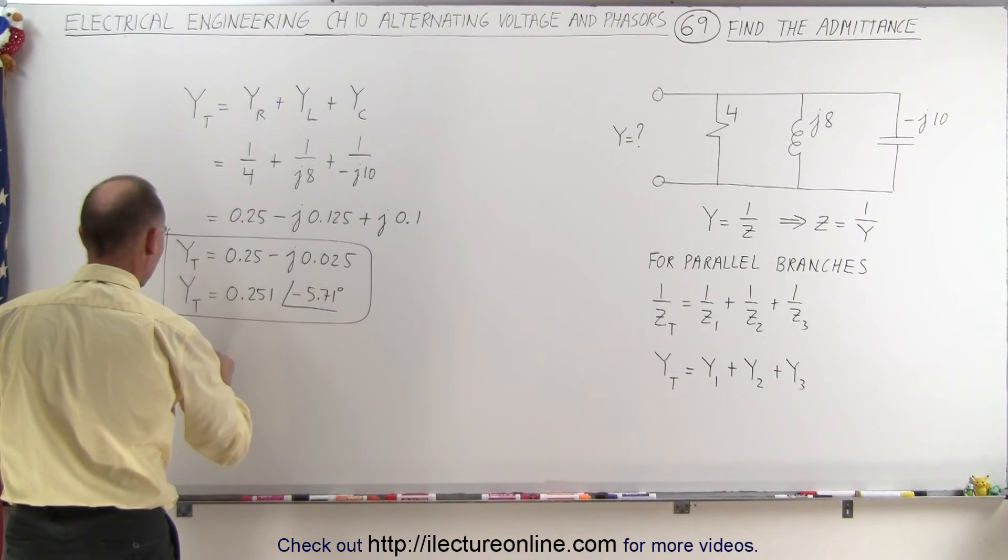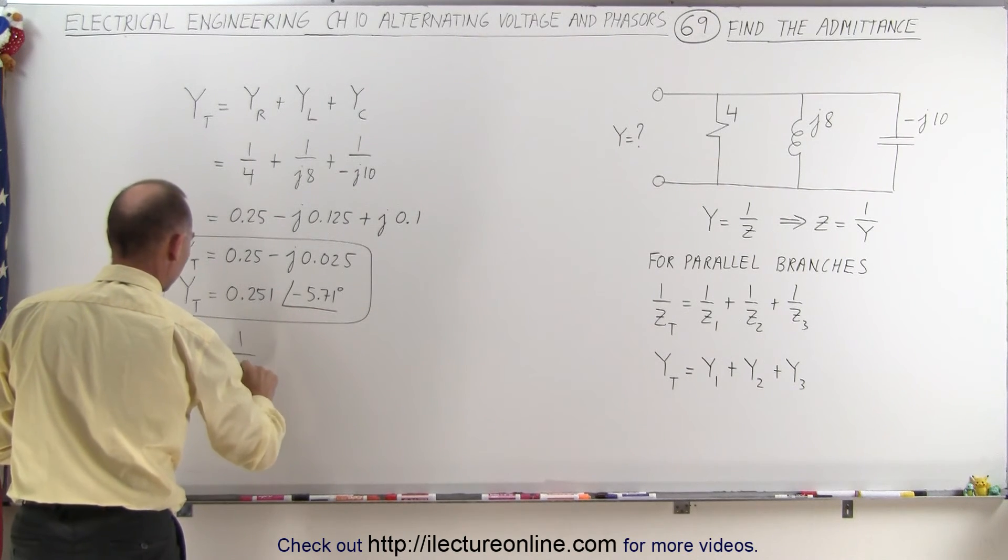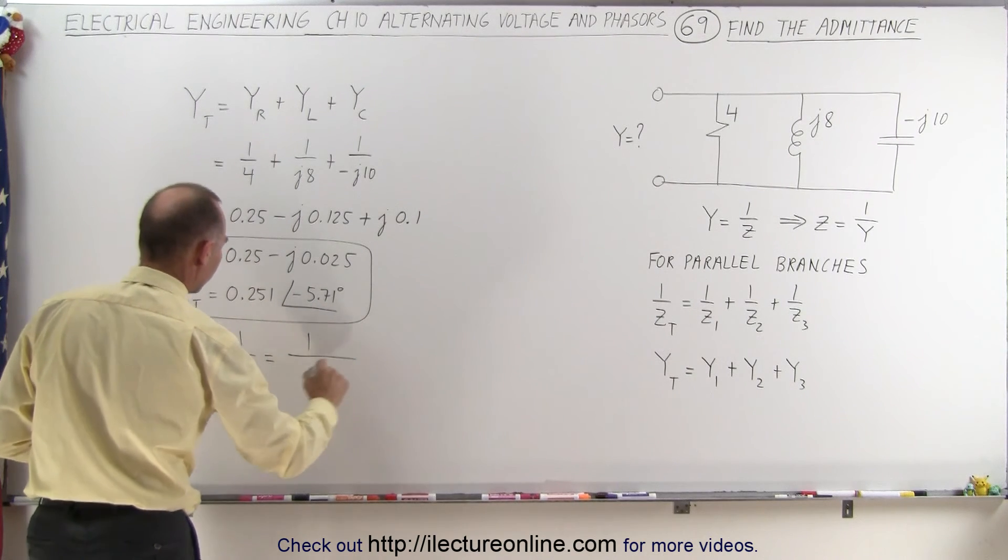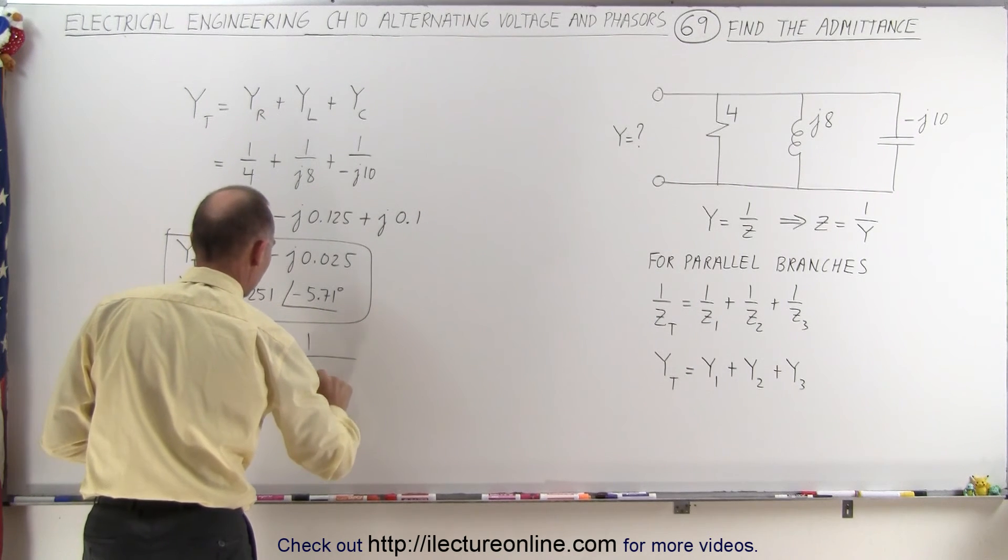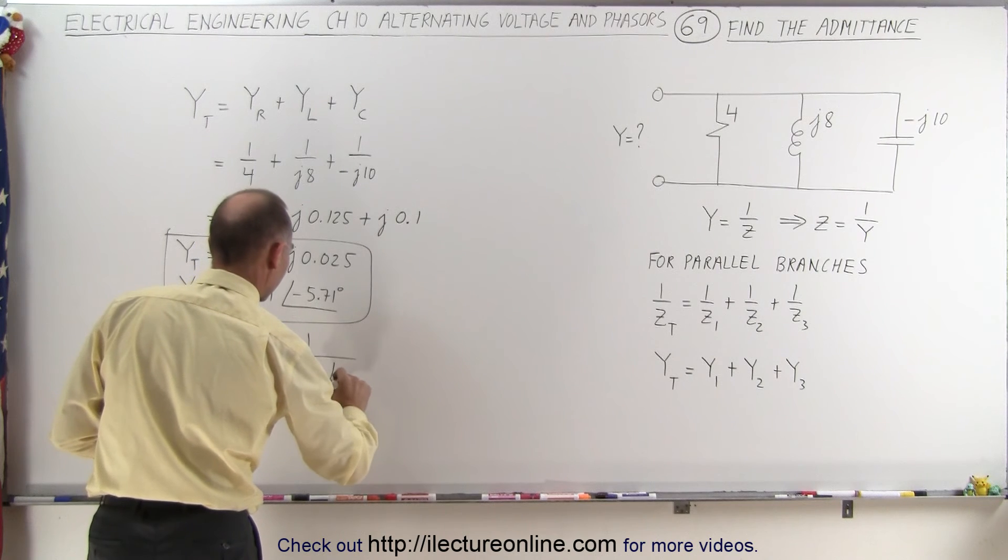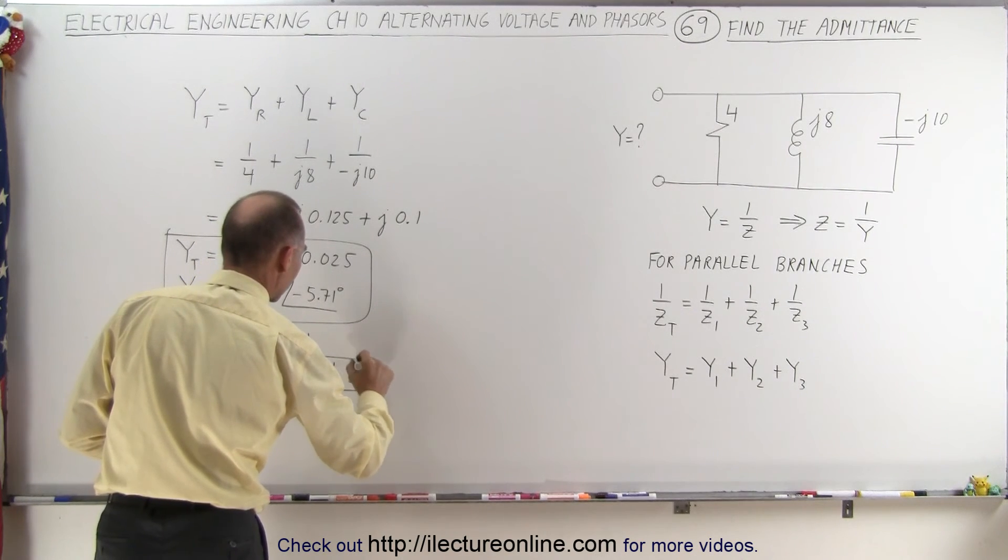So Z, the impedance, the total impedance, is equal to 1 over the admittance, which is equal to 1 over 0.25 minus 5.71 degrees.